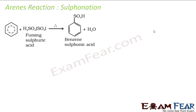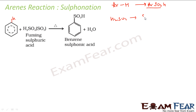Now we will talk about the sulfonation reaction. Here one hydrogen is replaced with SO3H. This happens in the presence of concentrated sulfuric acid, and it has to be fuming — hot, in the gaseous phase, at around 330 Kelvin. The reaction is: aromatic with hydrogen gives aromatic with SO3H. SO3 is formed by loss of water from H2SO4 — H2SO4 gives SO3 and H2O. Please note it is a reversible process.